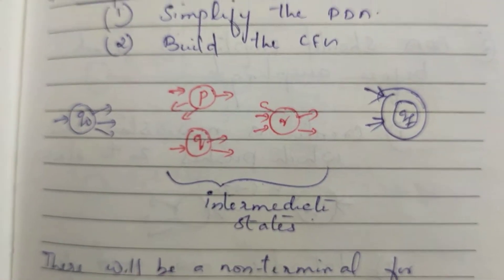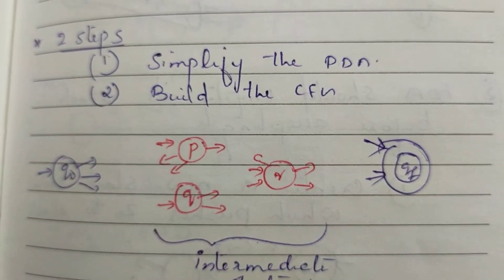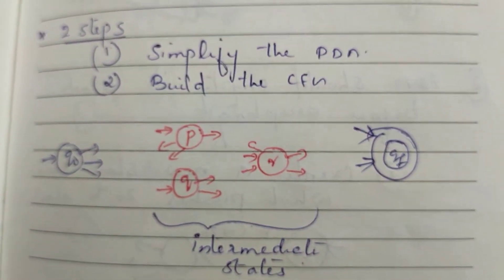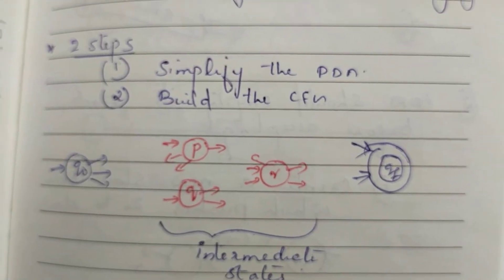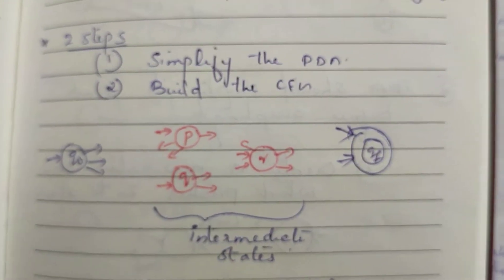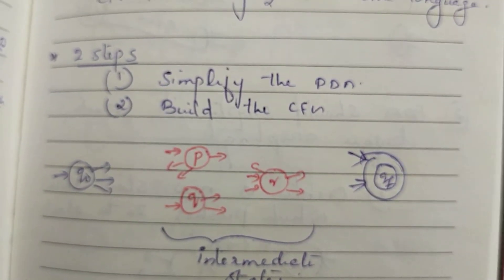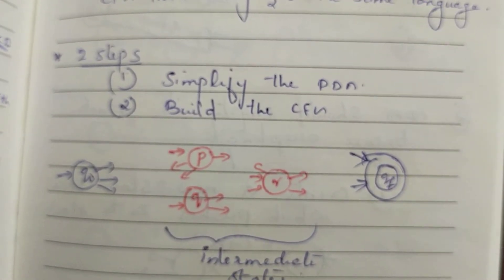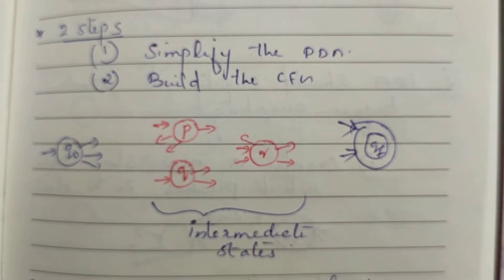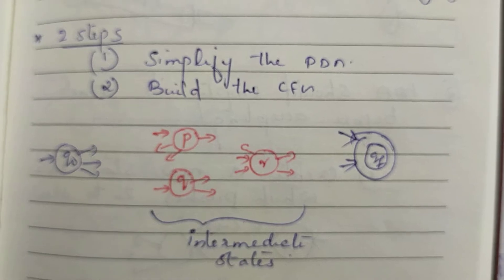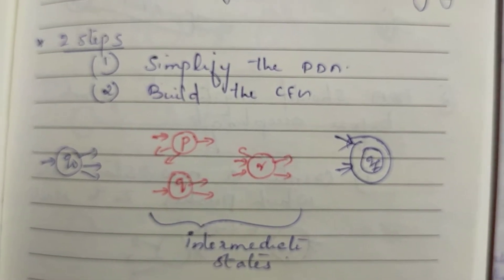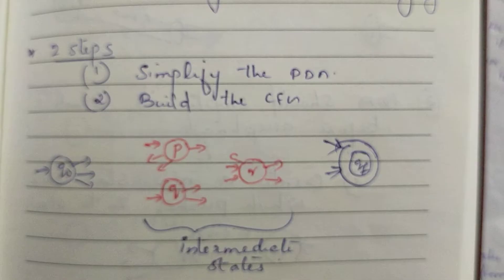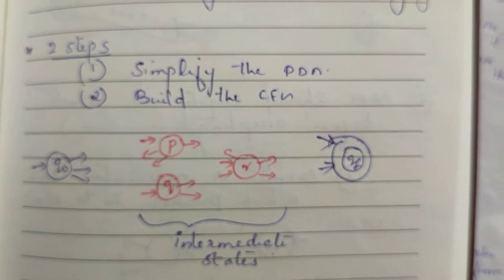The first step is simplifying the pushdown automata. We have to simplify the pushdown automata. We have to do some things about the DFA minimization method. When we study the state elimination method, we have to have an accepting state, a final state. We have to do an incoming edge in the initial state.